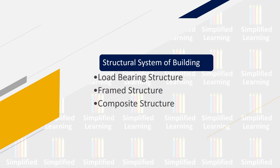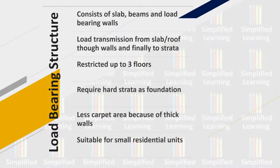Let's first see what a load bearing structure is. The key points are: it consists of slab, beam, and load bearing wall. The important term here is load bearing wall — the word 'column' is absent from load bearing structure. Load transmission goes from slab or roof or ceiling, then through the wall, and finally to the strata where the structure has been built. There is a limitation: load bearing structure is restricted to only three floors.